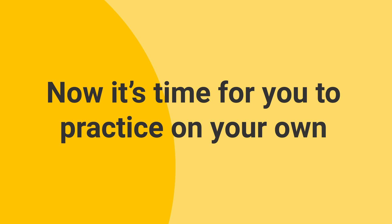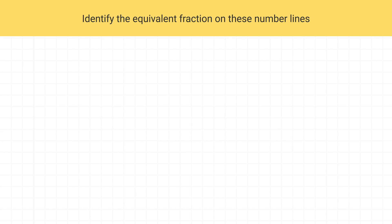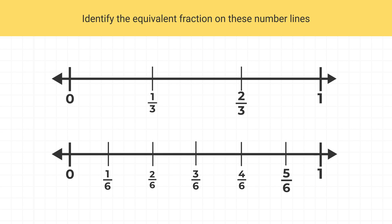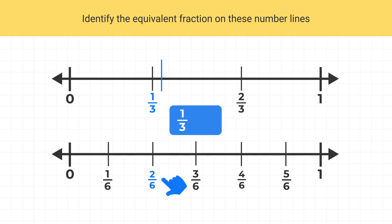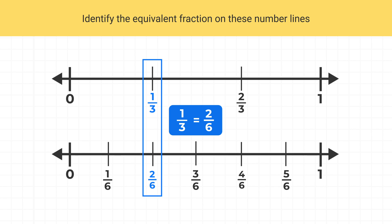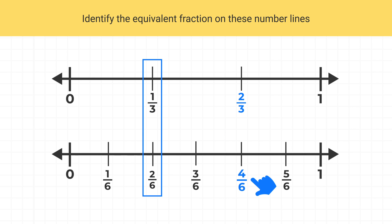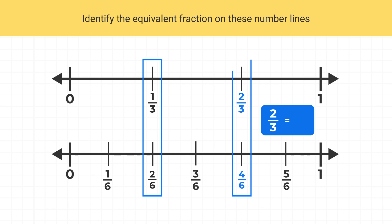Now it's time for you to practice on your own. Identify the equivalent fractions on these number lines. We can see one third is in the same place as two sixths, so one third is equivalent to two sixths. We can also see two thirds is at the exact same place as four sixths, so two thirds is equivalent to four sixths. And those are all of the equivalent fractions on these number lines.